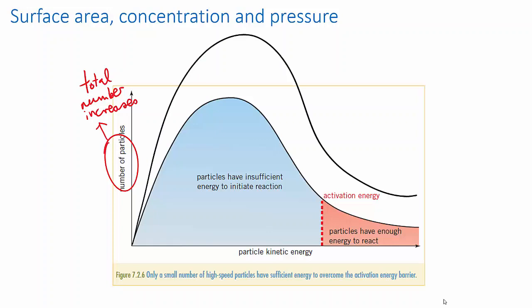The shape of the distribution remains the same, give or take my dodgy drawing, the proportion of particles with any particular speed doesn't change. It's just that there are more of them crowded together.